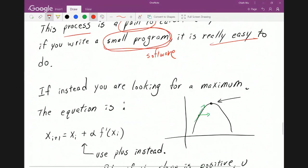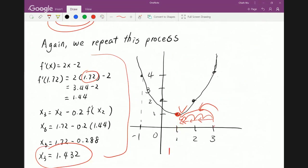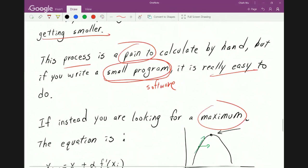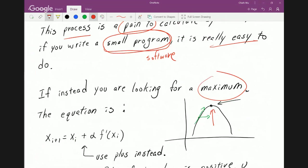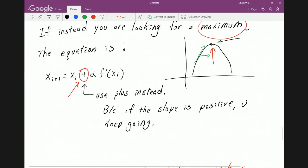So I need to note that if you are looking for maximum, like so far we are looking for minimum, right? But if you are looking for maximum point, the equation is slightly different. Instead of negative here, you use a positive. And that's because the derivative is the same direction as the direction you want to move when you are doing a maximum.